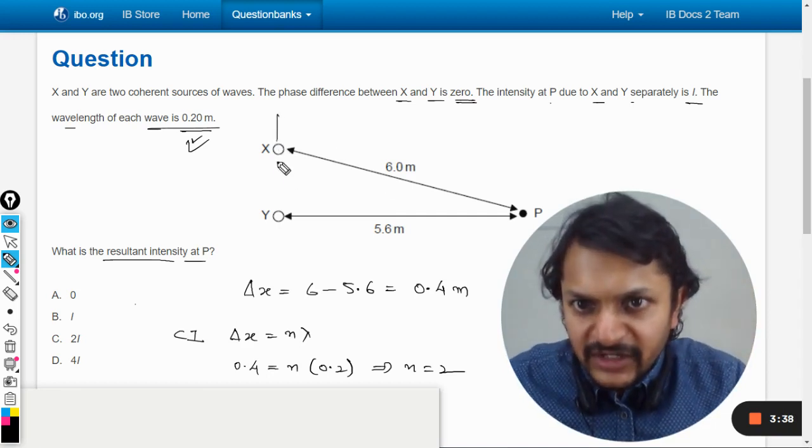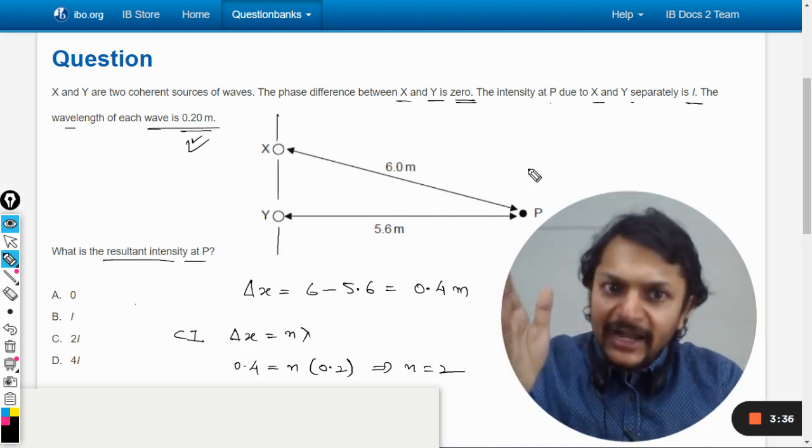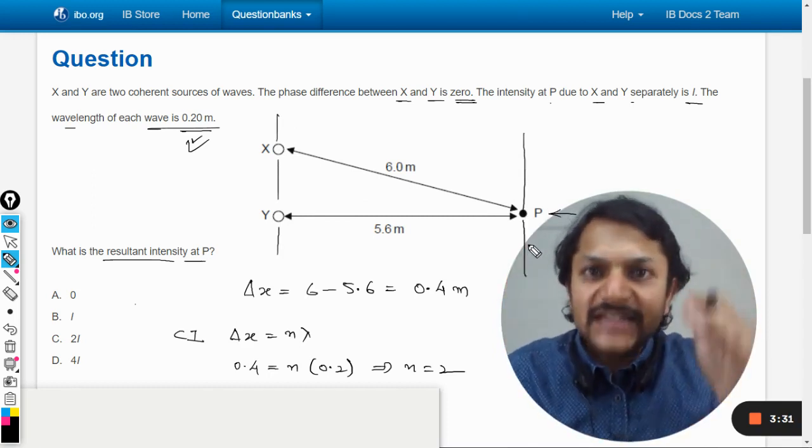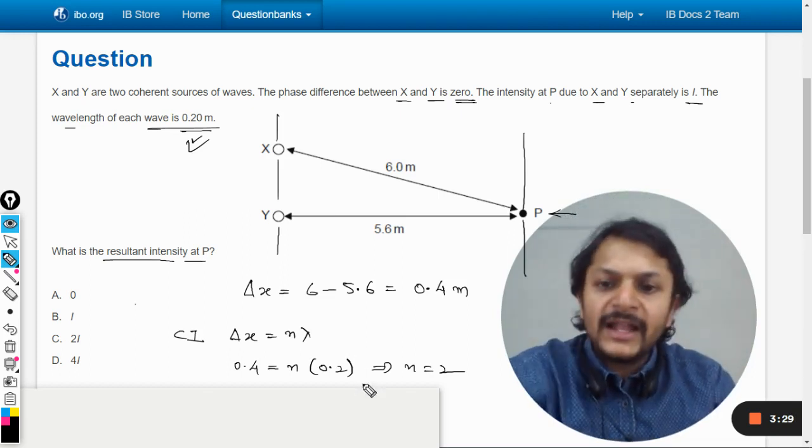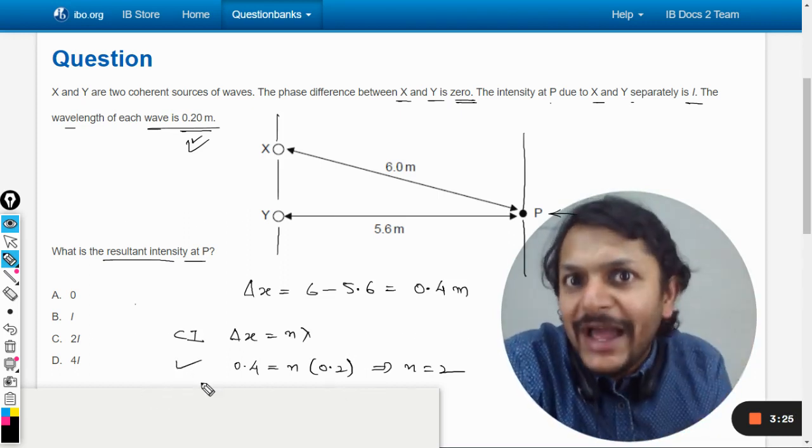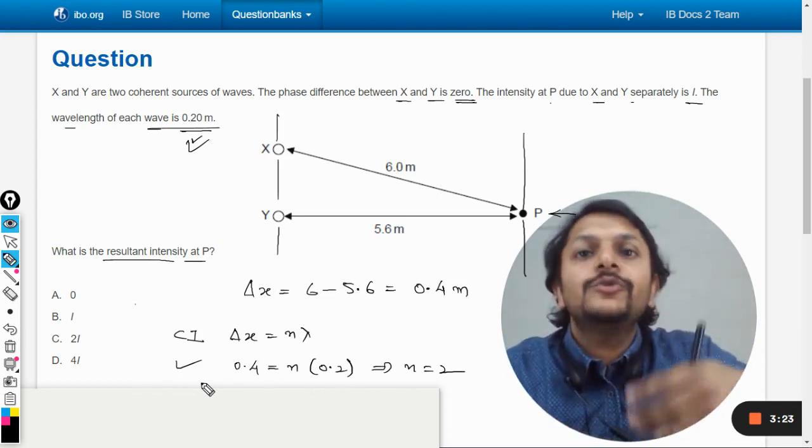If we could have taken this as the slits and this was the screen here, definitely this P point would be pointing towards the second bright spot. And hence it is a constructive interference. So the amplitudes are definitely going to add. And intensity is going to become 4 times.